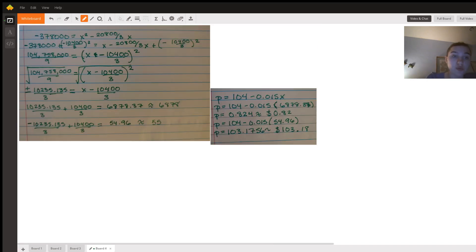So we know that whenever we have to add something on one side of the equation, we have to add it on the other. So I went ahead and added that negative 10,400 over 3 squared to both sides. Now on the left, we can just plug that in, really easy to assess for it. And on the right, we can simplify it to that factored form.